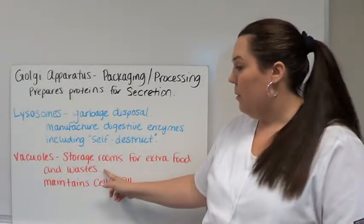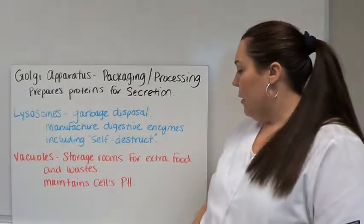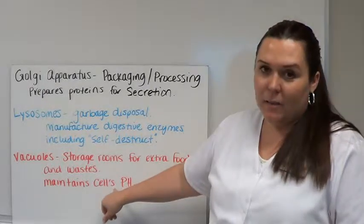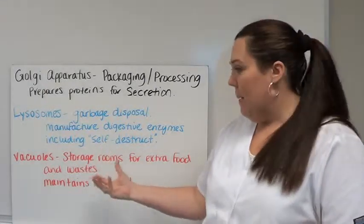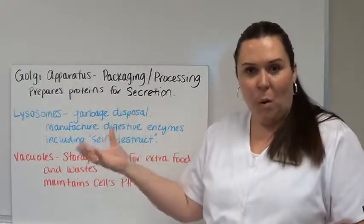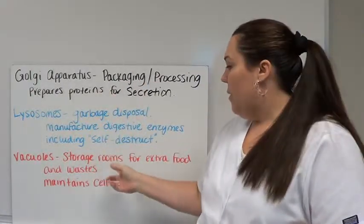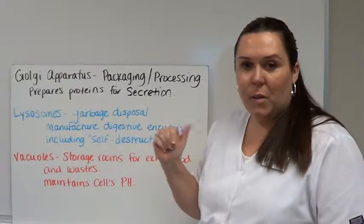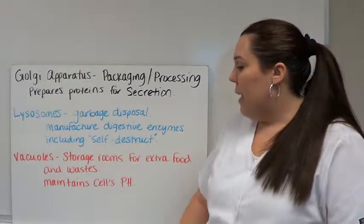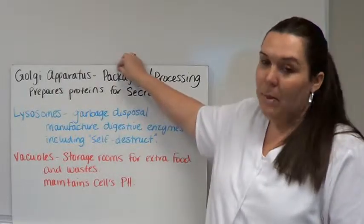The next organelle is vacuoles. Vacuoles are storage rooms for extra food and waste. They also maintain the cell's pH and give the cell its shape. Vacuoles, think of a vat. Vats hold whatever. Vats of extra food, vats of waste. Vacuoles are vats, storage and maintain cell pH.